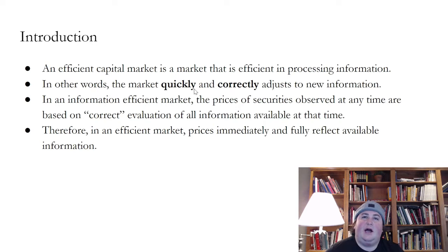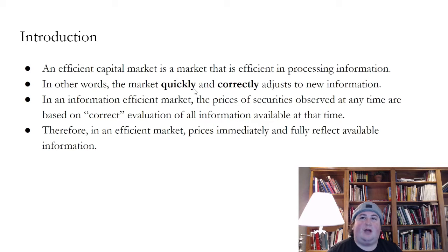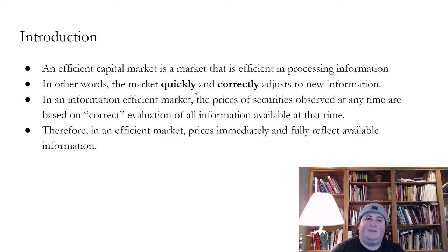In an efficient market, it's a market where there's an efficient processing of information. In other words, the market quickly and correctly adjusts to new information. In an efficient market, the prices of securities observed at any time are based on correct evaluation of all information available at that time. Therefore, in an efficient market, prices immediately and fully reflect available information.